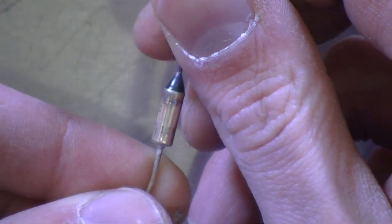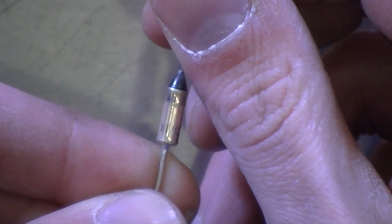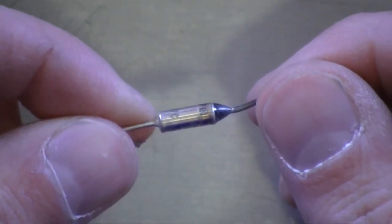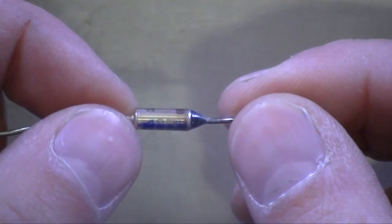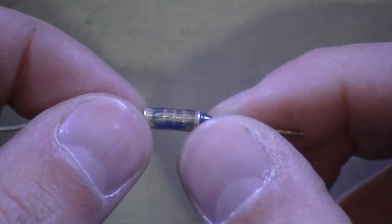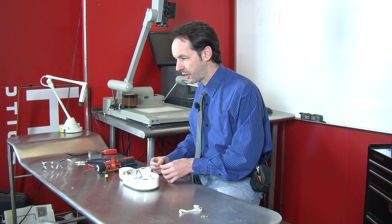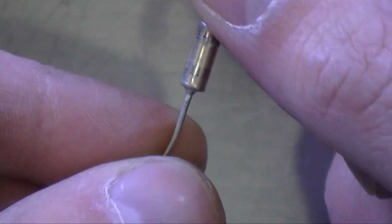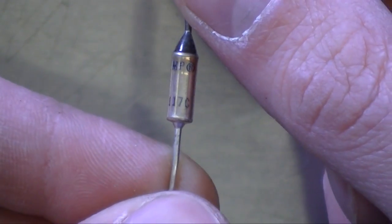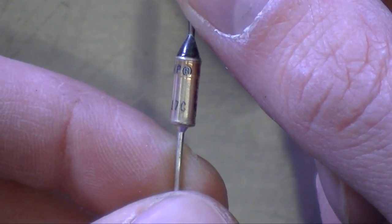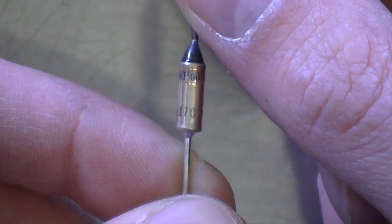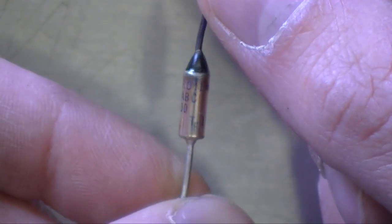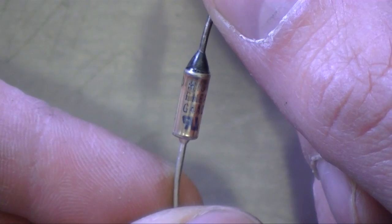What is this? This is a thermal fuse. Yep. This is a safety device. When this reaches a certain temperature it melts and it just breaks the connection. So that's a thermal safety right there. And I'm guessing, I could be wrong, but I'm guessing it's rated for 117 degrees Celsius. You can see 117 C right there on it. So that's a thermal fuse.